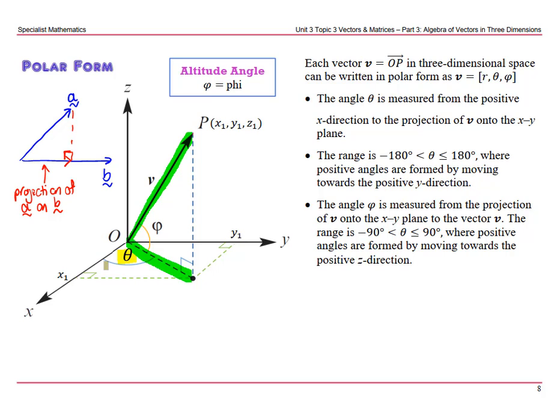The range is negative 180 degrees less than theta, which is less than 180 degrees, where positive angles are formed by moving towards the positive direction. Always remember your angles are positive for quadrants one and two, or go to three and four with negative angles between negative 180 and 180.